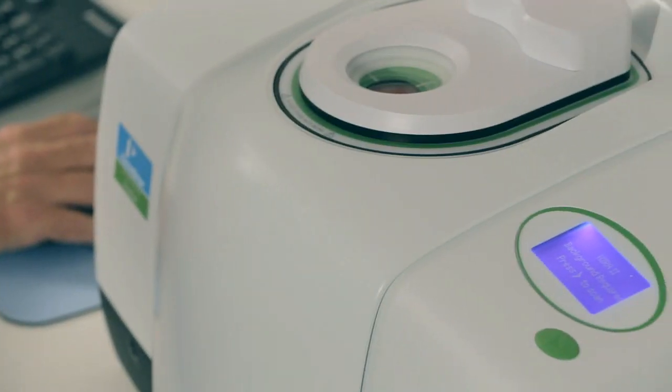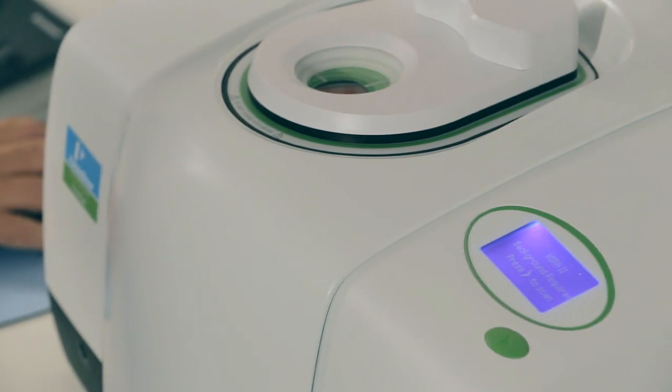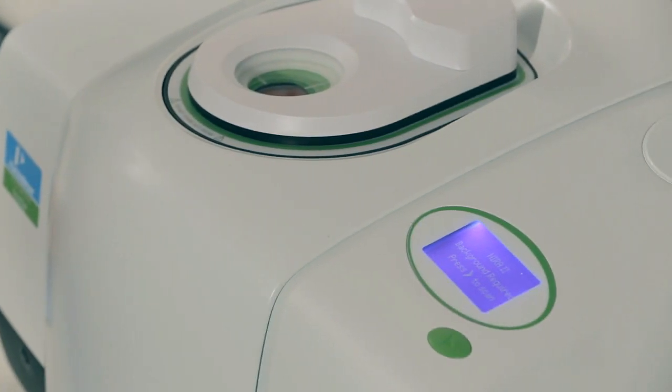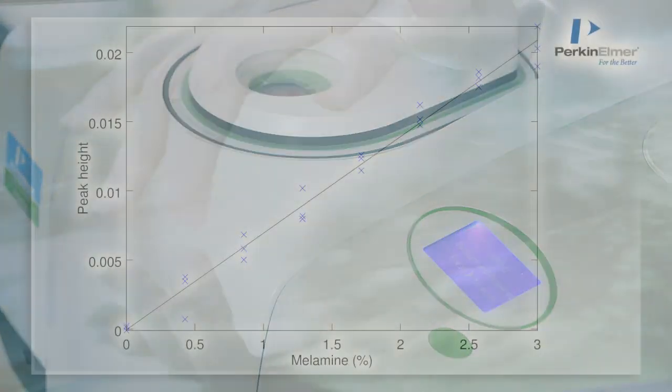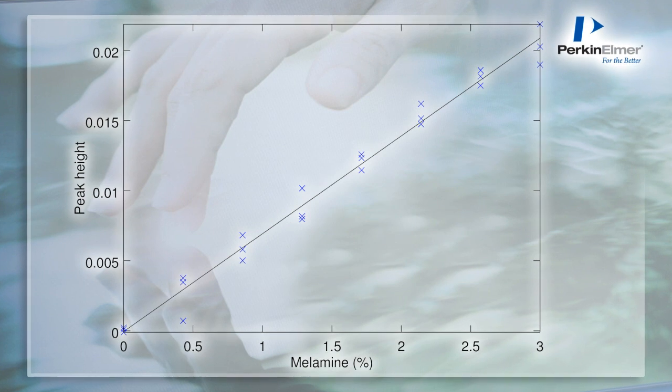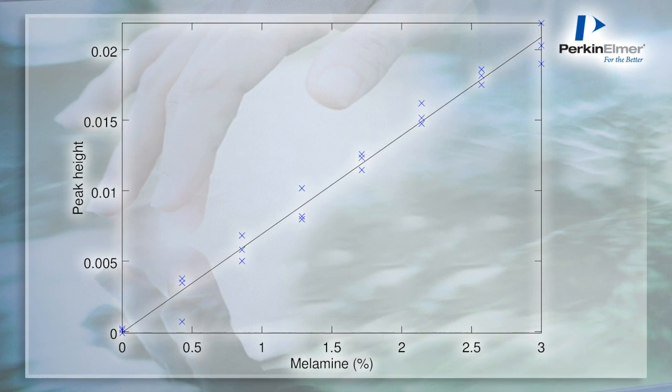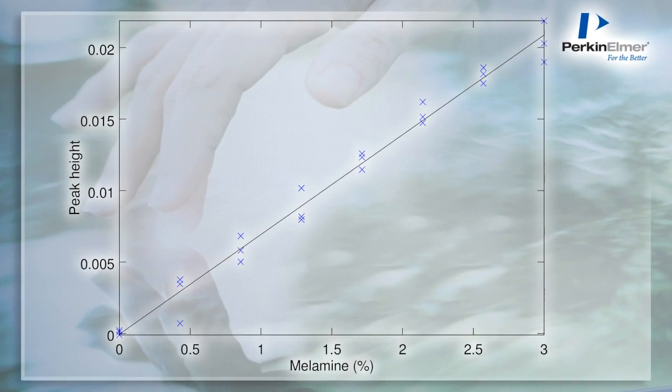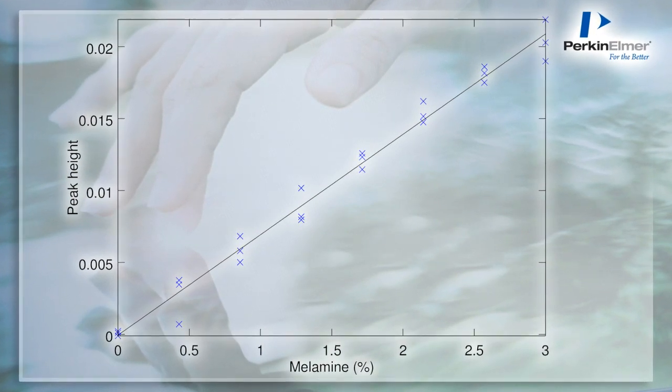Previously there have been two available approaches. The first is to prepare a series of calibration standards with different concentrations of the adulterant, measure the spectra, and then develop a quantitative model for the adulterant. Several publications have shown that this is an effective technique for melamine, but the limitation is that the method development is very time-consuming and in the end you have a method that is specific to just one adulterant.